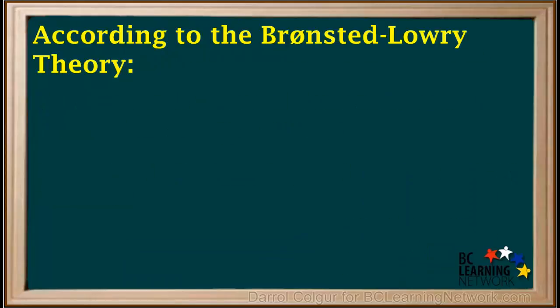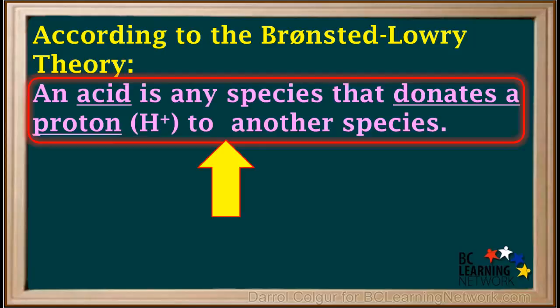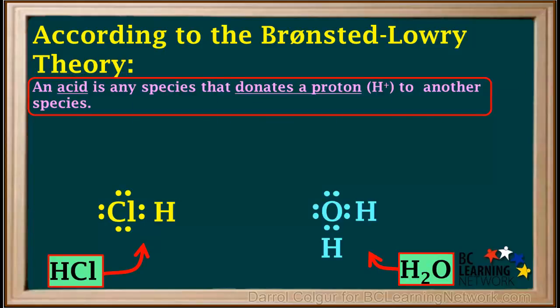According to the Bronsted-Lowry theory, an acid is any species that donates a proton or H+ ion to another species. Let's look at an example. We'll start with a molecule of hydrogen chloride, HCl, and a molecule of water, H2O. Here are the Lewis structures for these molecules.